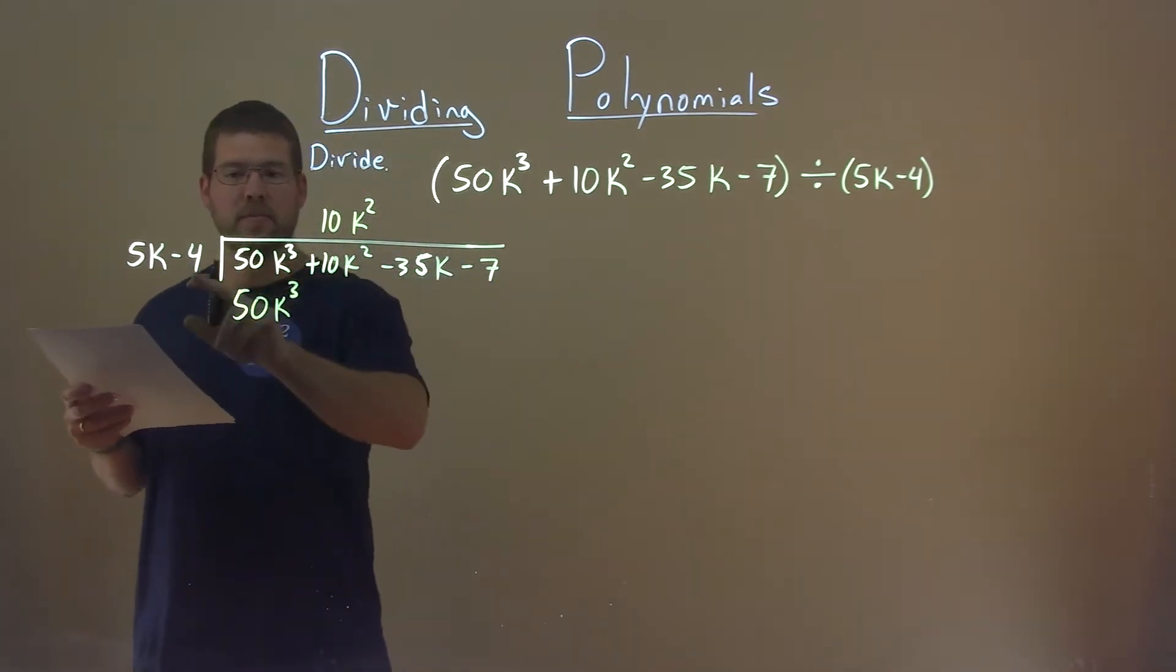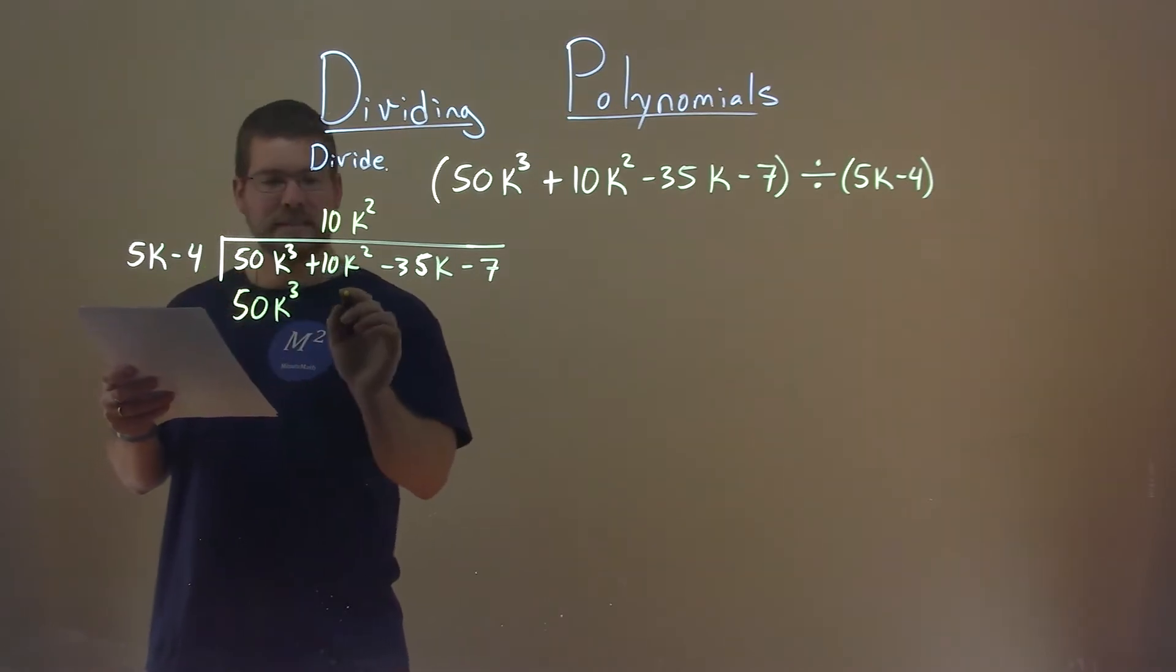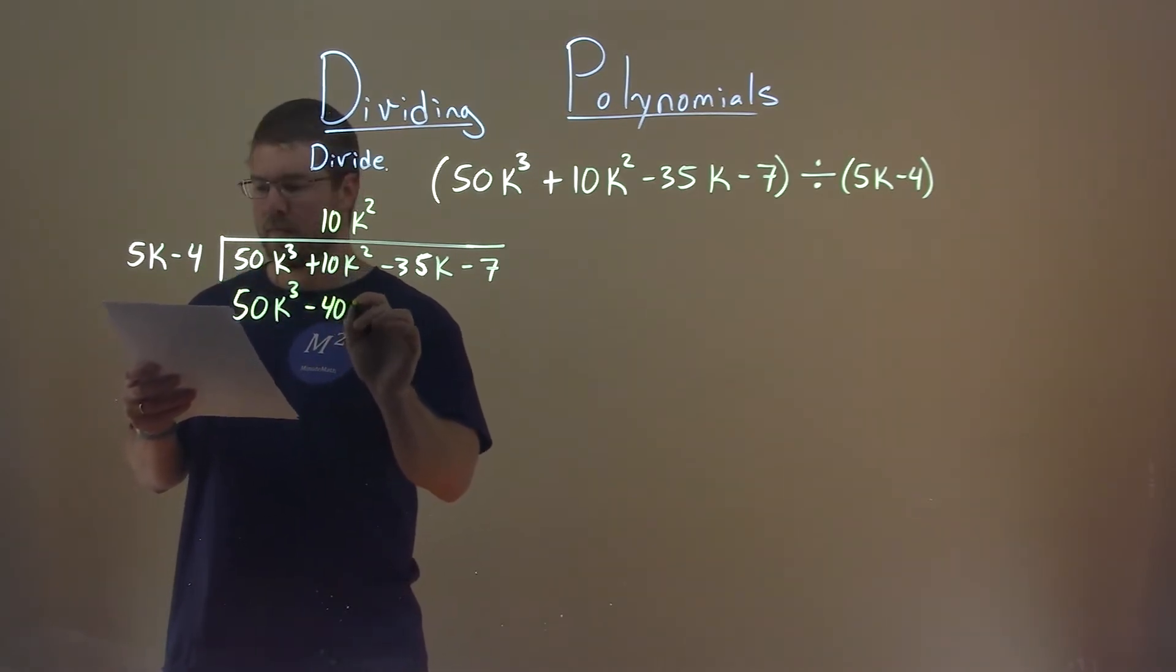10k squared now, multiply to both parts. 10k squared times a negative 4 is a negative 40k squared.